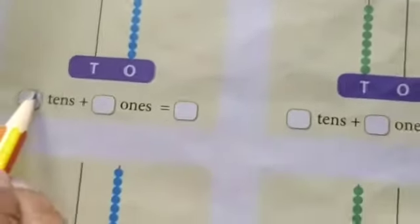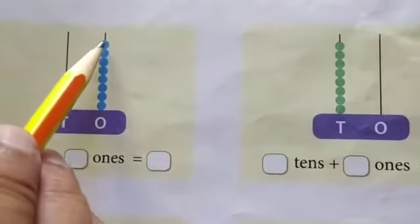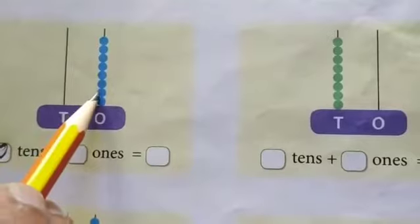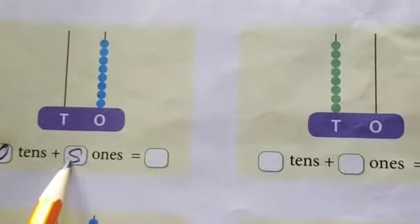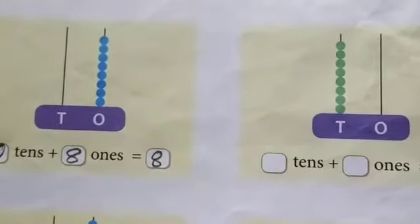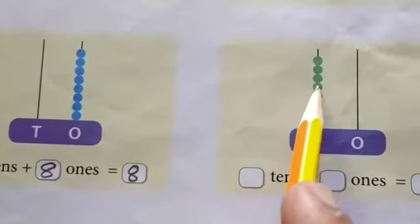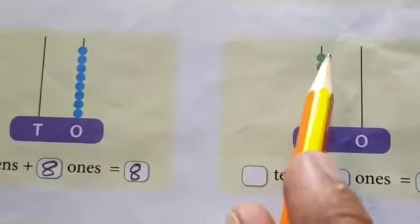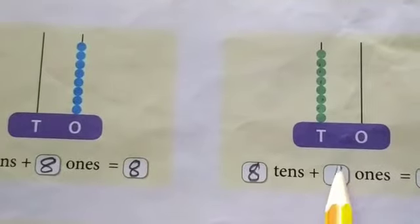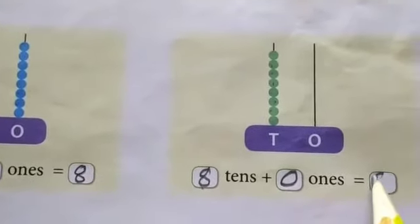Here, zero tens. How many ones are here? Eight ones. Eight ones means eight only. Here, eight tens and zero ones. Eight tens means eighty.